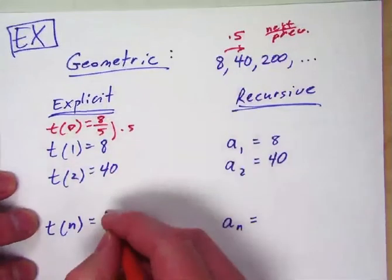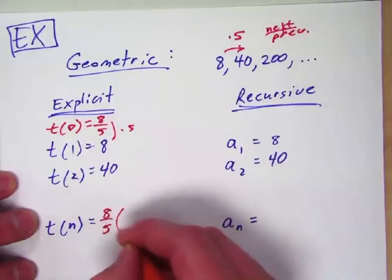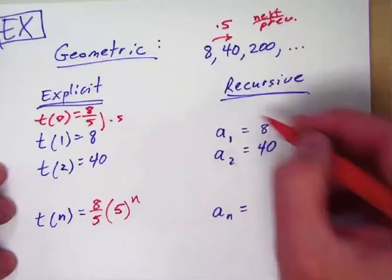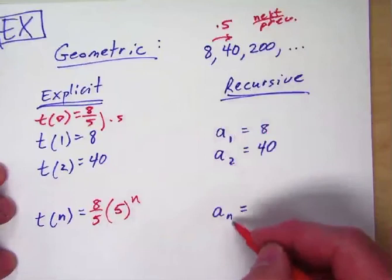So t sub 0 the 0th term of the sequence is 8 over 5 and it's multiplying by 5 each time. It's getting 5 times bigger. Simple. Starts at 8 fifths. It's being multiplied by 5 every time. We've done those for a while.